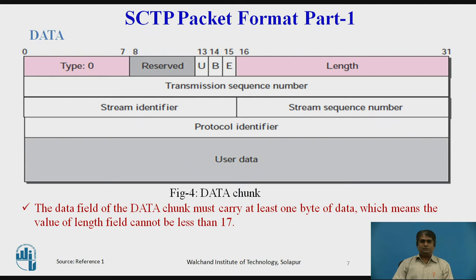The data chunk carries the user data, and a packet may contain zero or more data chunks. The figure shows the format of a data chunk. The type field has a value of 0. The flag field has 5 reserved bits and 3 defined bits: U, B, and E. The U (unordered) field, when set to 1, signals unordered data — in this case, the value of the stream sequence number is ignored. B (beginning) and E (end) bits together define the position of a chunk in a fragmented message.